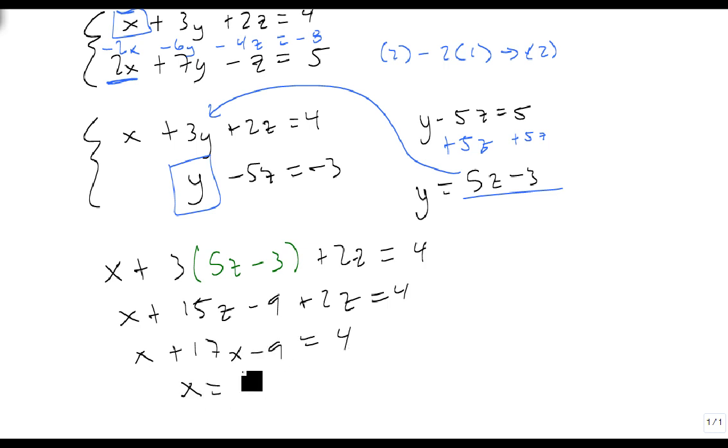so x, that should be a z, not an x, is minus 17z plus 13. So now we know that our y is 5z minus 3, our x is minus 17z plus 13,